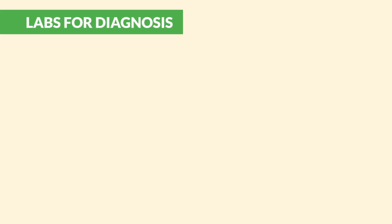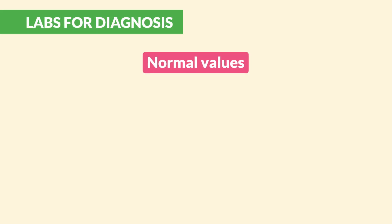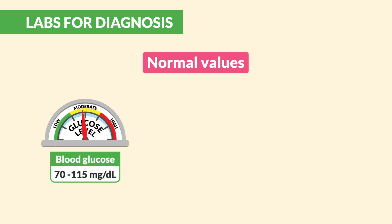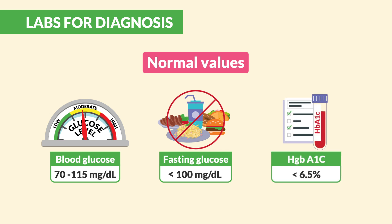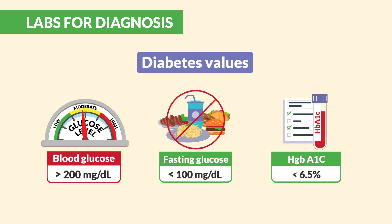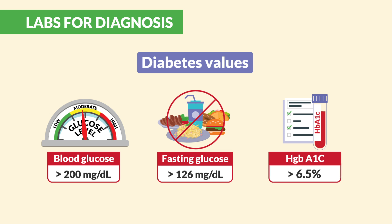Normal values for blood glucose are 70 to 115. For fasting glucose, it's typically less than 100, and hemoglobin A1c should be less than 6.5. But in diabetes, we see blood glucose over 200 on random tests, fasting blood glucose over 126, and a hemoglobin A1c over 6.5.